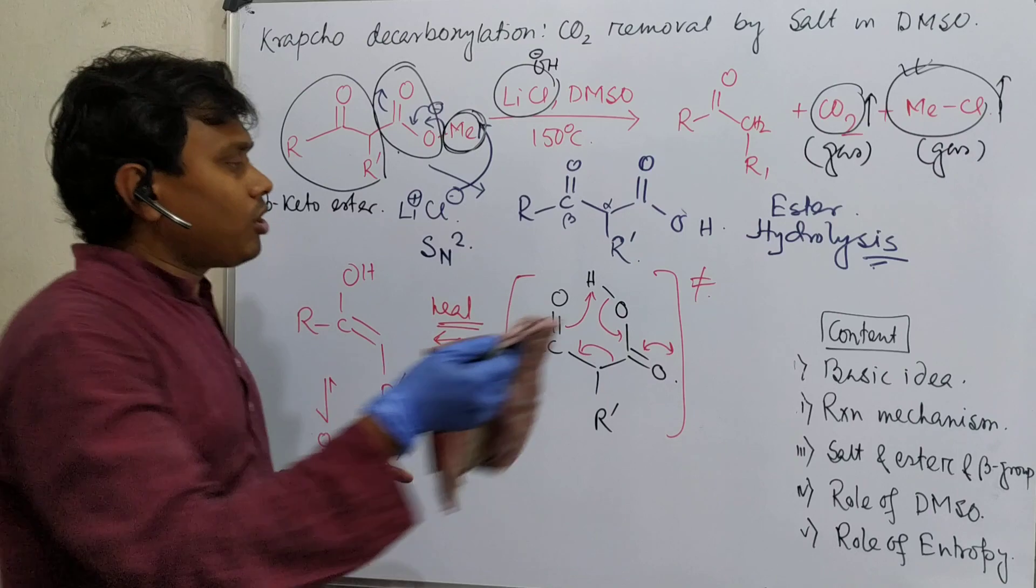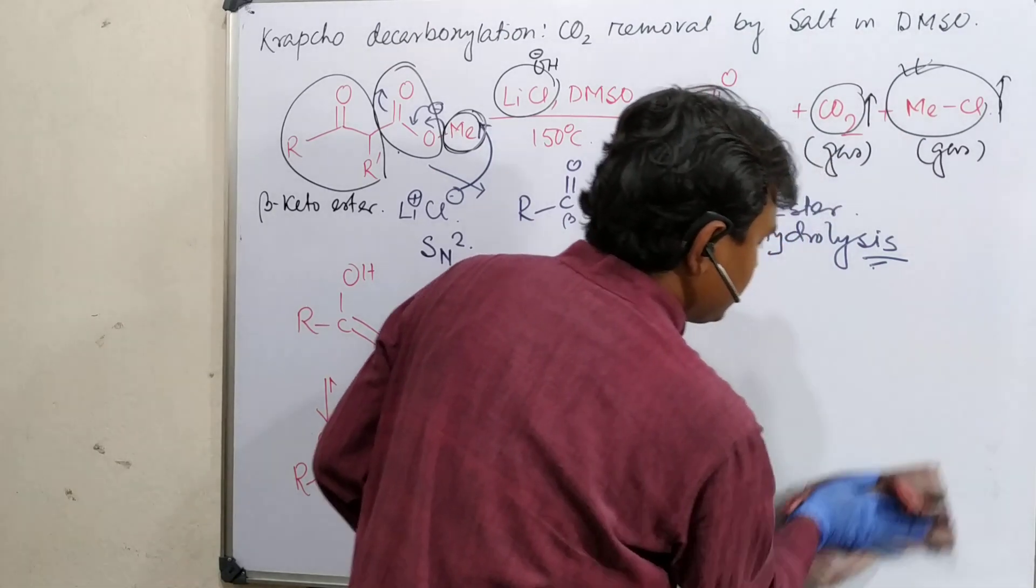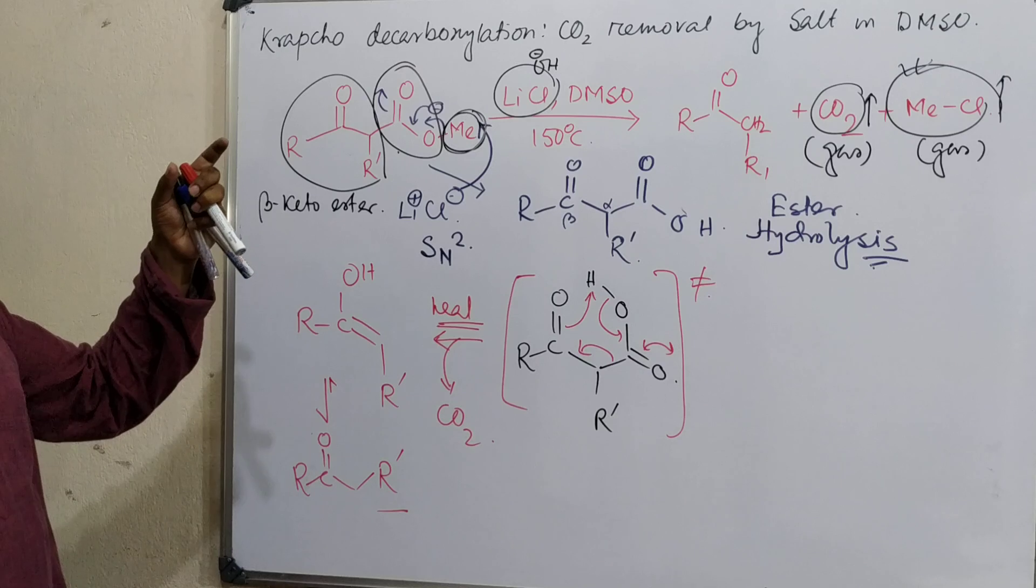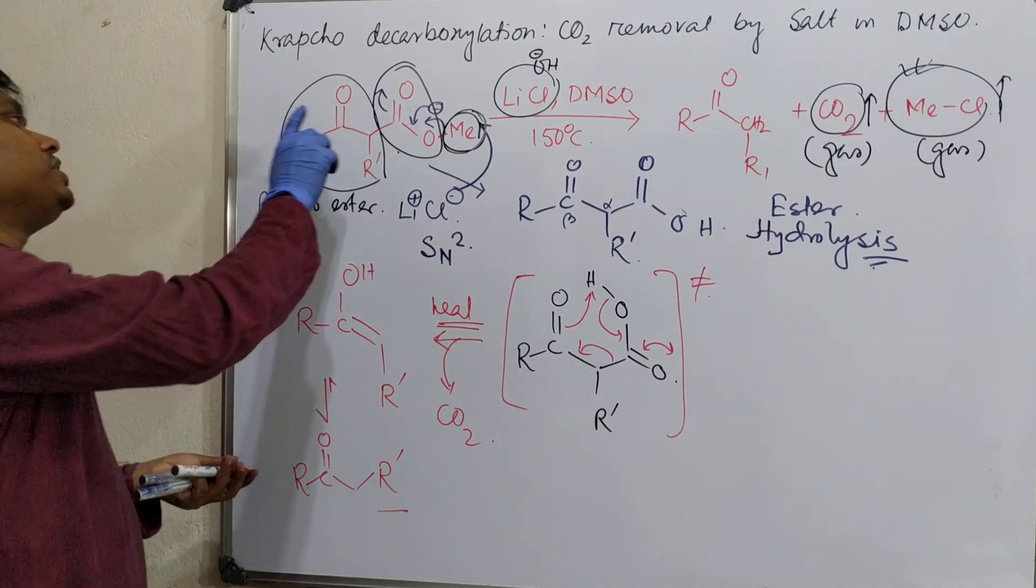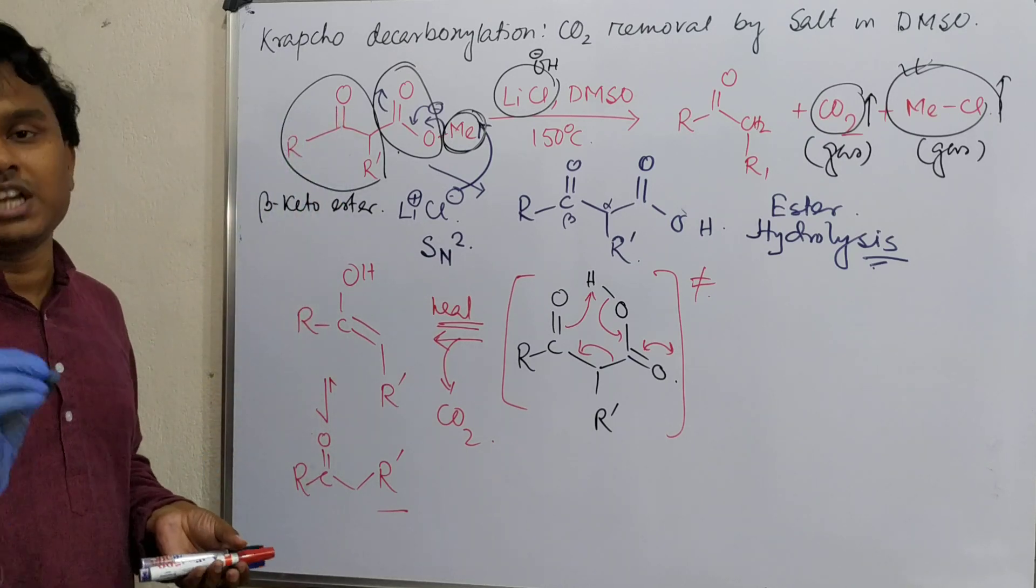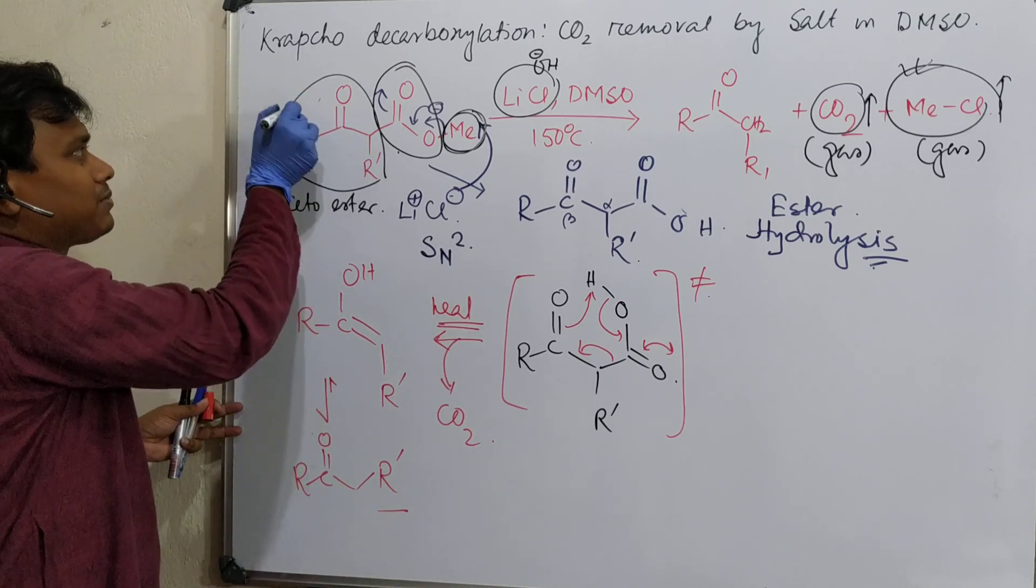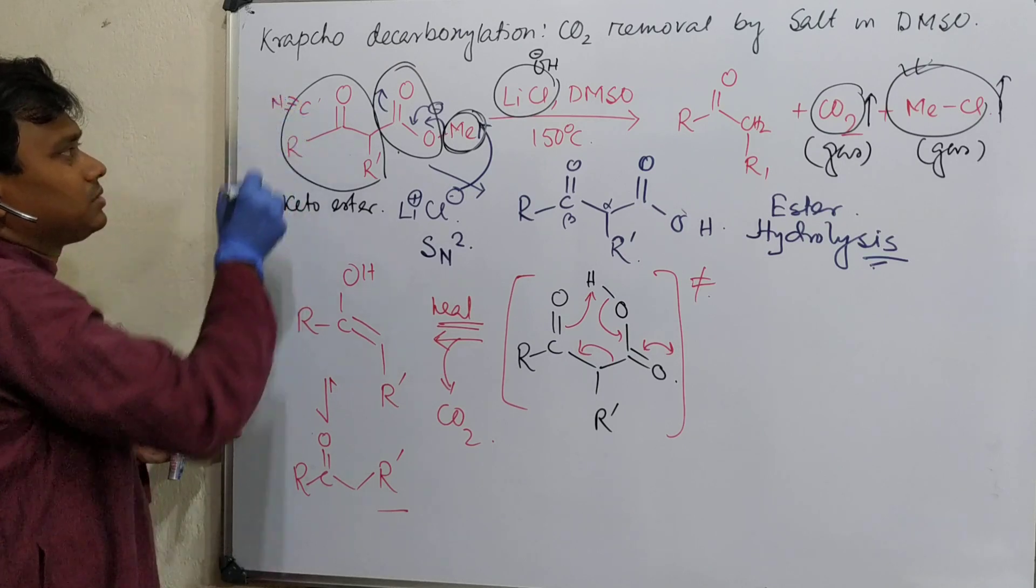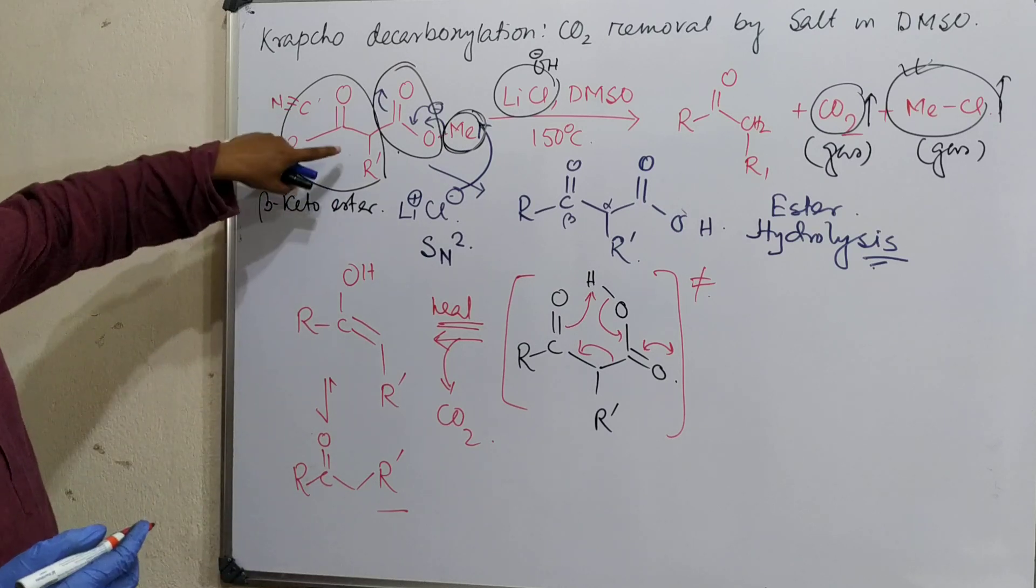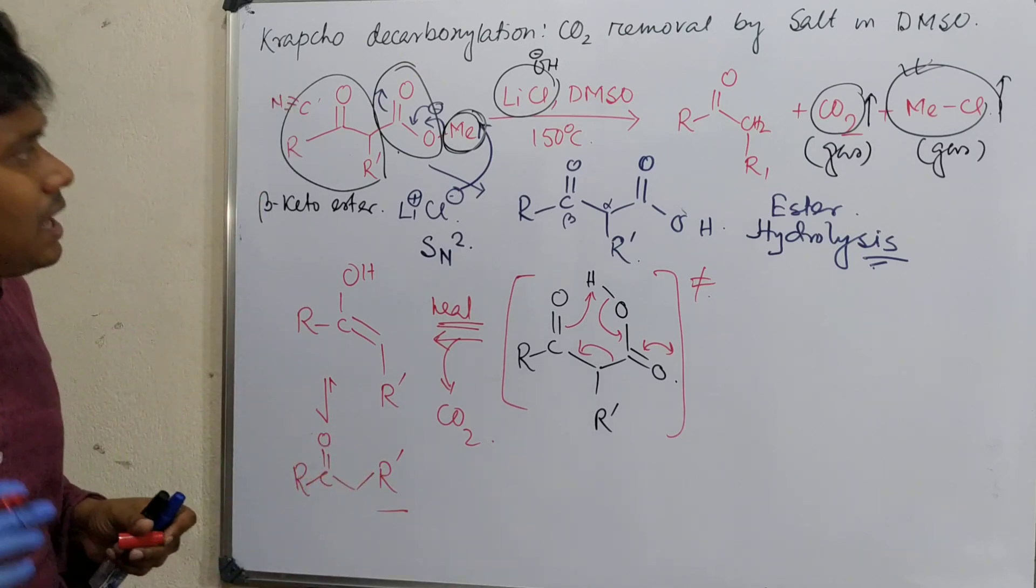Now let's discuss the role of this withdrawing. In case of beta position, not only carbonyl - any multiple bond if you put having some withdrawing capability. For example, not only carbonyl, nitrile is possible. So even other derivatives of this double bond can also show, but withdrawing effect accelerates the reaction.